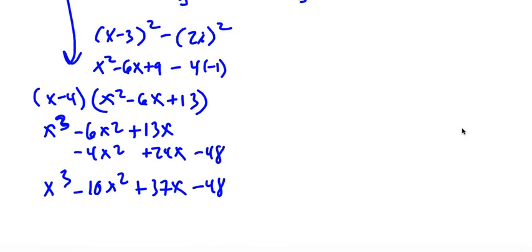So if I simplify all this, I would get x²-6x, 9+4. Let me double check. So this will be 9+4. So that'll be our 13 right there.